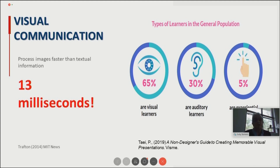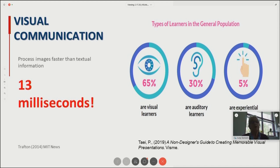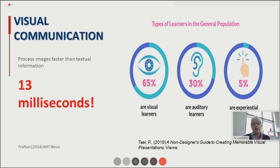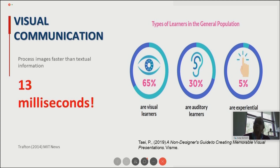Visual communication — there's some pretty amazing data and facts about it. Our brain processes visuals much, much faster than it does textual information. One item I found indicated 13 milliseconds is all it takes for us to process images. Within the general population, 65% are visual learners, 30% are auditory learners, and 5% are experiential learners. I tend to think that the experiential learners tend to be the younger ones in the population — I've tested that within the classes that I teach.